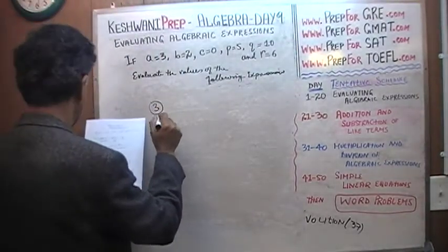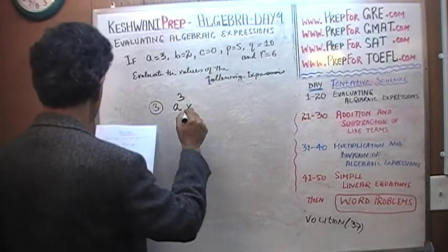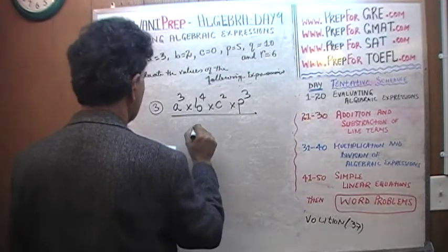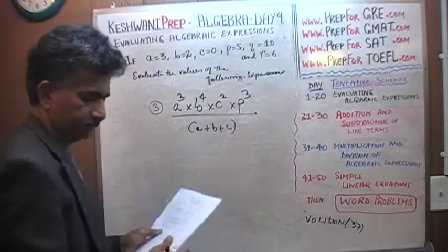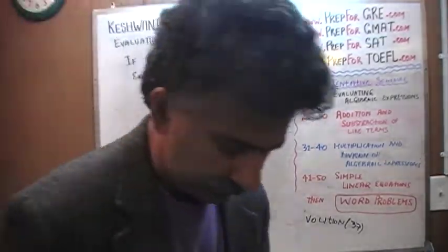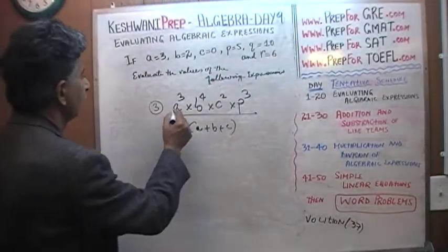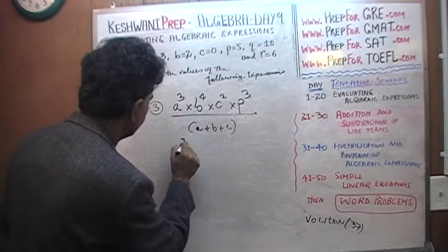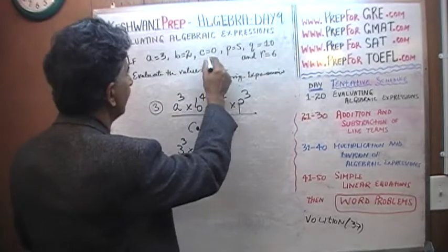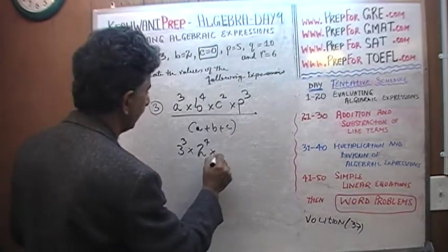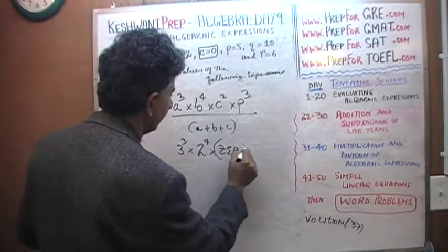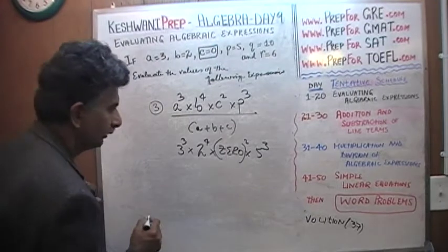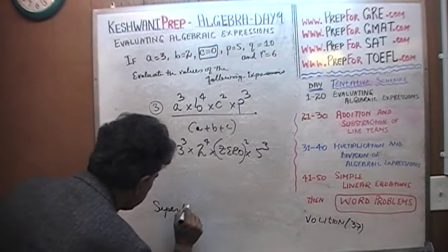Number 3: A cubed times B to the 4th times C squared times P cubed over A plus B plus C. This looks very nasty. But: A cubed is 3 cubed, B to the 4th is 2 to the 4th — and then C squared. C is 0. Zero squared is still 0. So the entire numerator is being multiplied by 0, which means the whole thing equals 0. Everything else from this point on is superfluous.